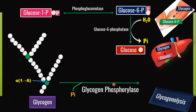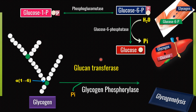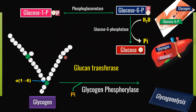Glycogen phosphorylase with inorganic phosphate removes glucose one by one as glucose-1-phosphate, then glucose-6-phosphate, then glucose. Glucose is removed one by one until there are 4 glucose residues remaining in that particular branch. Then, another important enzyme called Glucan transferase removes the terminal 3 glucose residues, breaks the α-1,4 glycosidic bond, and establishes a new α-1,4 glycosidic bond elsewhere. Glucan transferase is also called oligo-1,4 to 1,4 glucan transferase.